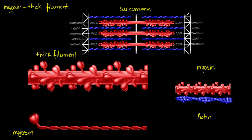Individual myosin molecules really only have three areas that we need to know about, the first being the heads. Each myosin molecule is going to have two heads — we've got heads here on the thick filaments, and there are going to be two of them per myosin. They're all going to be wrapped together within that thick filament.